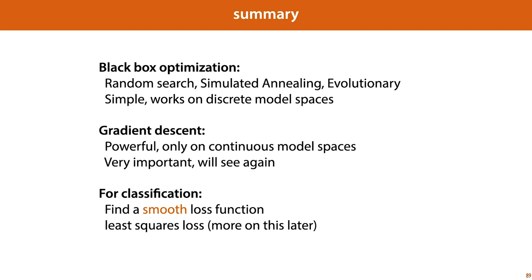That's the end of the lecture. Let's look back at what we've learned. We've looked at different black box optimization methods, things like random search, simulated annealing, and evolutionary methods. These are simple, they work on discrete model spaces, and they don't require us to know anything about the internals of our model.